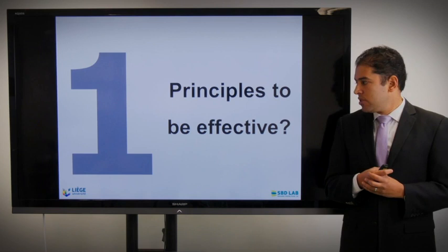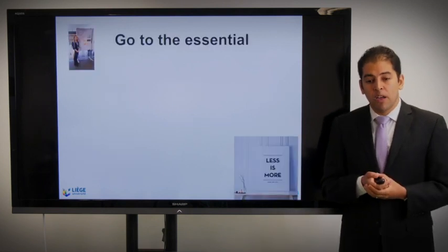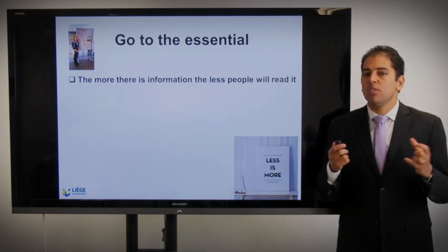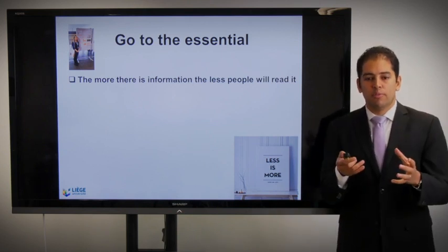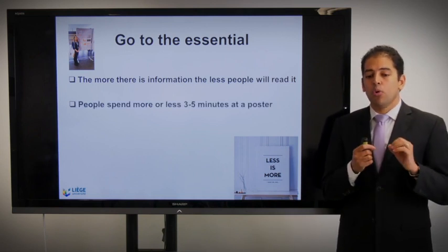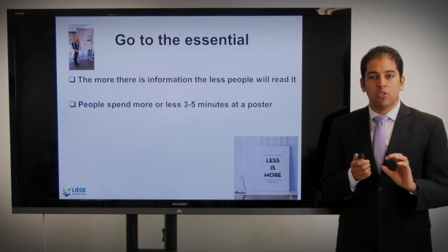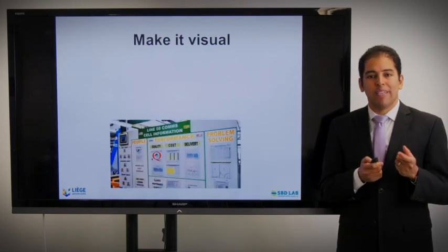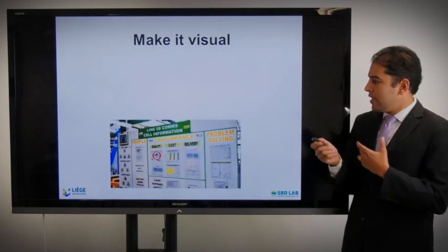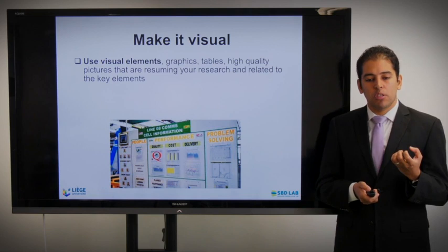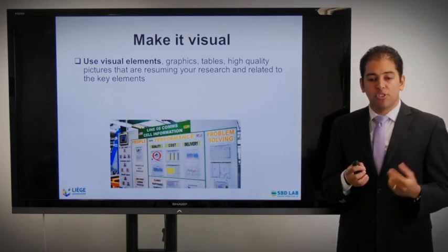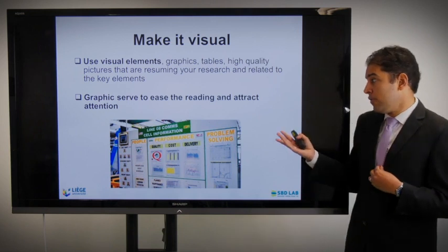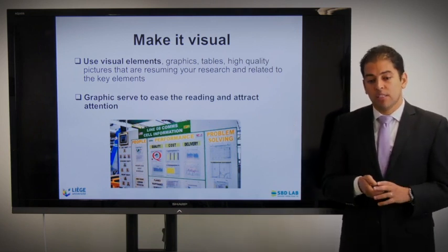What are the principles to be effective when doing a poster? Number one: go to the essentials. The more information there is, the less people will read your poster. You have to be very selective. People spend more or less three to five minutes at a good poster — that's all the duration of attention. Know your audience and adapt your language. It's important to make it visual, using visual elements, graphics, tables, and high-quality pictures that summarize your research and related key elements.